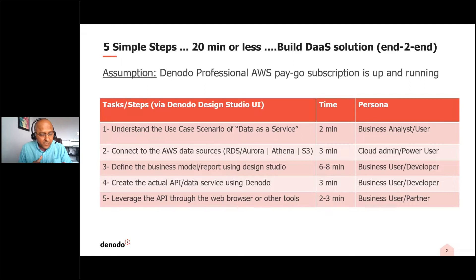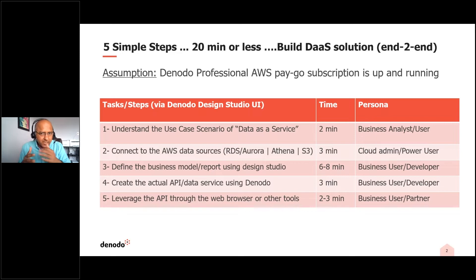The second step is connecting to the apps and AWS data sources — in this case RDS Aurora, Athena, and other data sources. Once we have the connections, we're going to define the business model. Thereafter we're going to create the actual API data service using Donato, and then leverage that API in a web browser or other tools. In a nutshell, the power of Donato is going to be showcased in terms of how easy it is to get started on your data as a service journey.